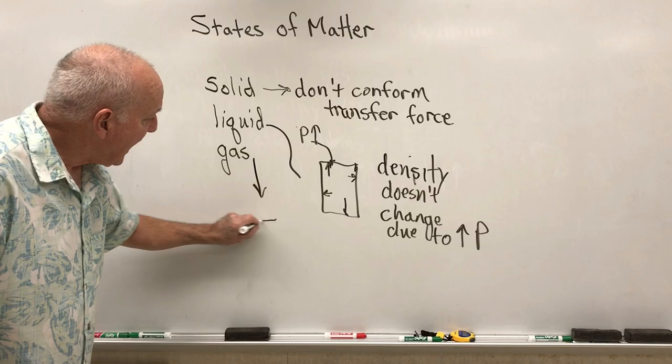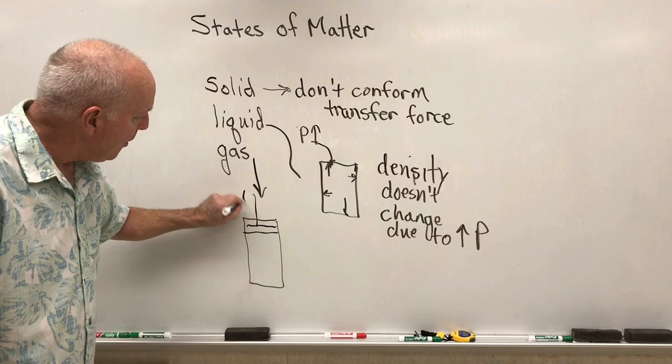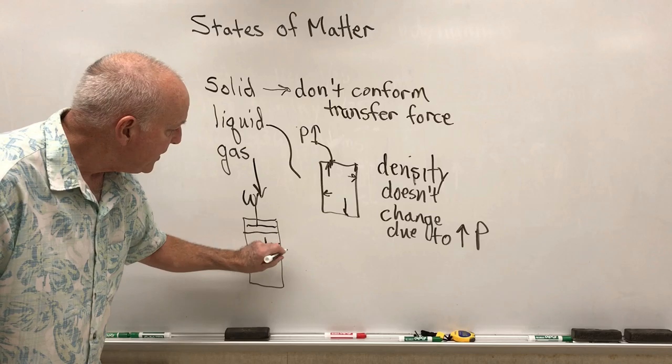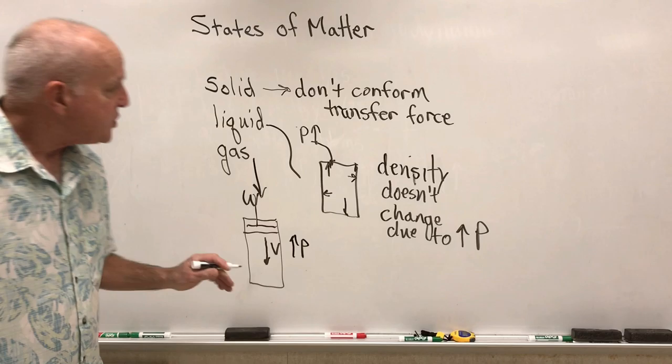Whereas with a gas, if I have a gas in a cylinder with a piston, as I perform work on it, I can increase the pressure and decrease the volume. So as I increase the pressure in the gas, the volume goes down.